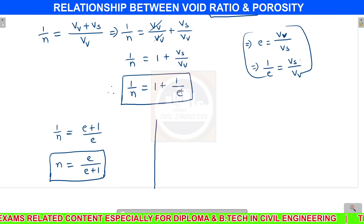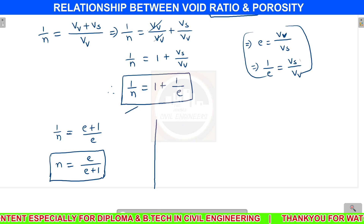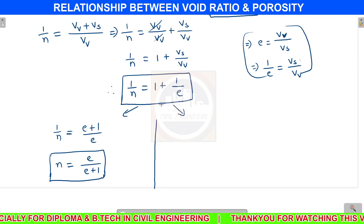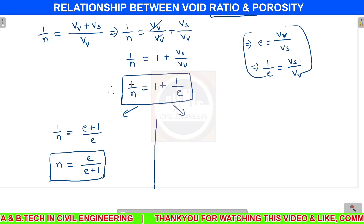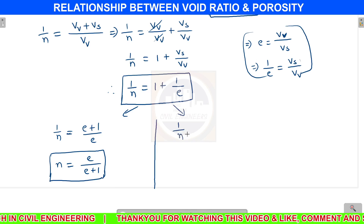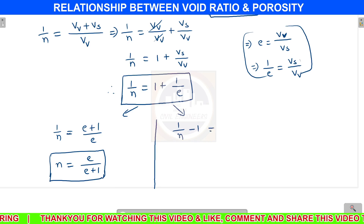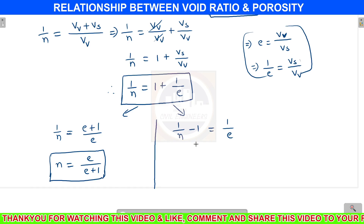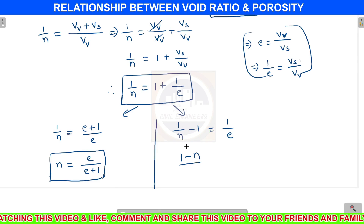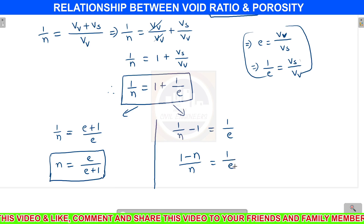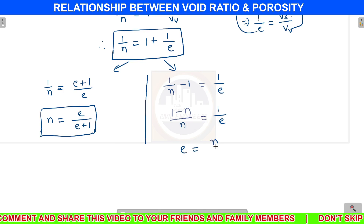Next, to calculate e in terms of n: from 1/n equals 1 plus 1/e, I move 1 to the left-hand side so 1/n minus 1 equals 1/e. Taking LCM gives (1 minus n)/n equals 1/e. Inverting this gives e equals n divided by (1 minus n).